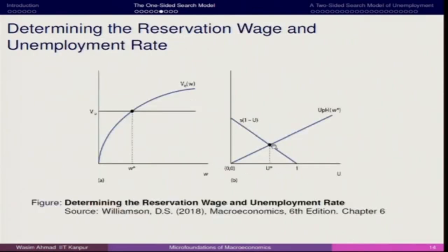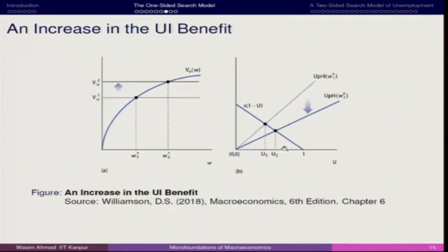By chart, the equilibrium looks like this. On the x-axis we are measuring unemployment, not the wage rate — it is deciding about unemployment in the economy. Here we have the comparative statics for the first variable: what happens when we have an increase in unemployment insurance (UI) benefits. When UI benefit increases, it moves up and we see the VEW curve shift.